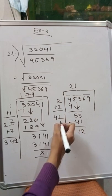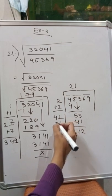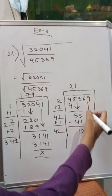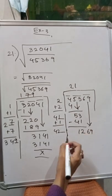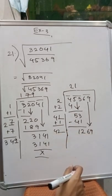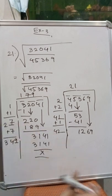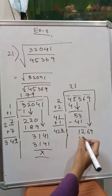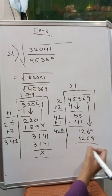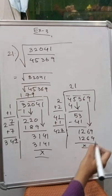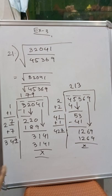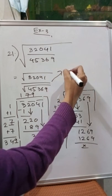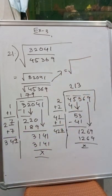Since the last digit is 1, we add 1 to get 42, then a dash. Now 69 comes down. We have to place a number in the dash so that 1269 comes exactly or something less than 1269. If we place 3, exactly 1269 comes. So we place 3, and we have obtained the square root of both numbers.